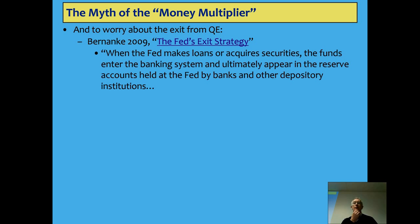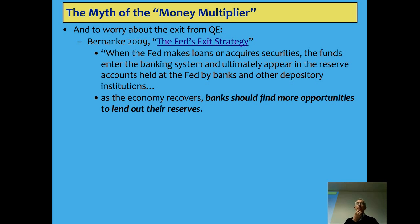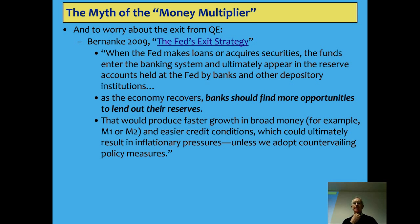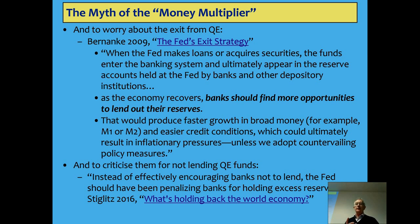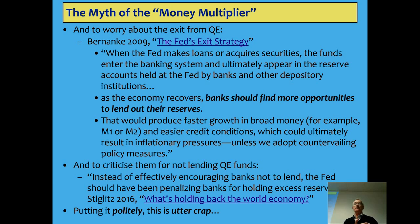Bernanke also worried about leaving QE, saying: as the economy recovers, banks should find more opportunities to lend out their reserves. He seriously believes this, and argues that if we don't do anything about it, we're going to have massive inflation — the type of nonsense you can find on the web all the time. And even Joe Stiglitz, a much better economist than Bernanke and more progressive, was saying that the Fed should have been penalising banks for holding excess reserves. This is just crap, and it's about time we treated it with the respect it deserves — which is none whatsoever.